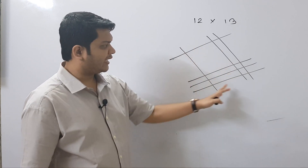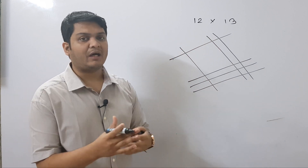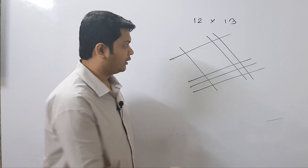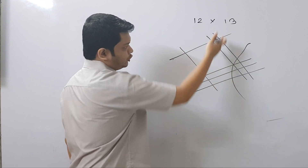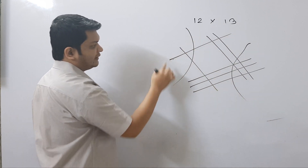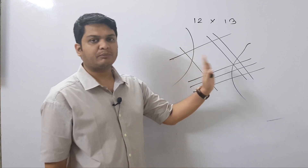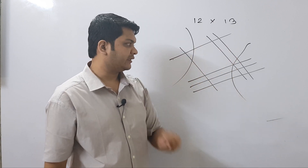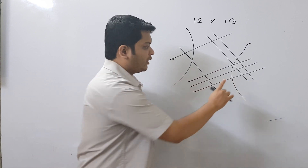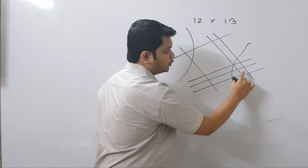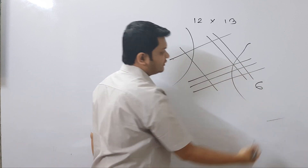As you can see, there are some intersecting points here, so we will now group the intersecting points. This will be our first group, these two pairs will be our second group, and this will be our third group. We will start from the rightmost side. How many intersecting points are there here? Let's count: 1, 2, 3, 4, 5 and 6. So we will write 6 here.